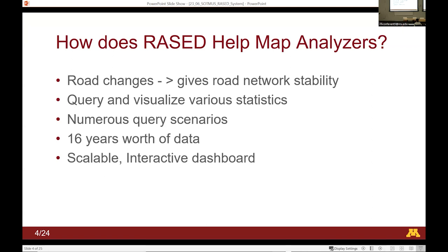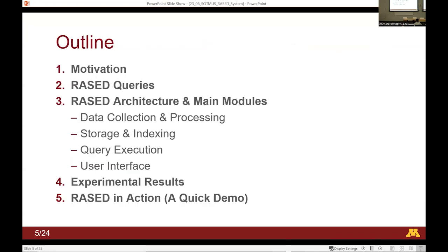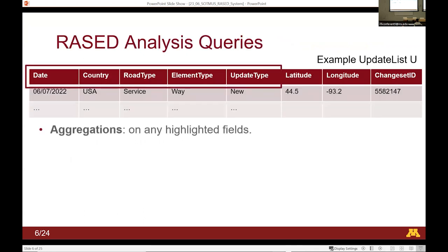The goal is to show the number of updates with statistics so we can see how often the map is changing, with various query scenarios that allow you to compare countries, focus on certain types of roads or certain areas, either over large or small periods of time. There are numerous query scenarios, and RASID supports almost 16 years' worth of OSM history — all in a scalable and interactive dashboard where each query returns results in milliseconds.